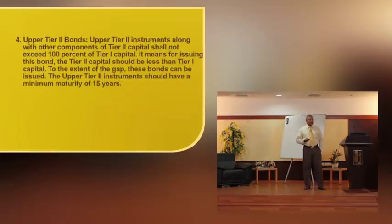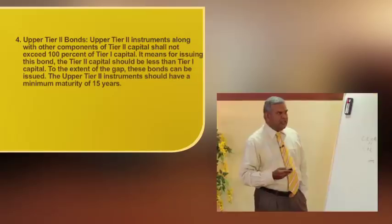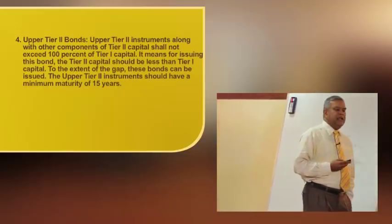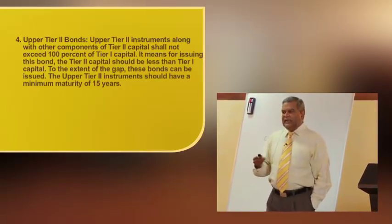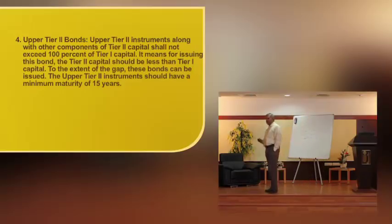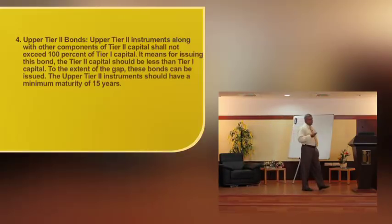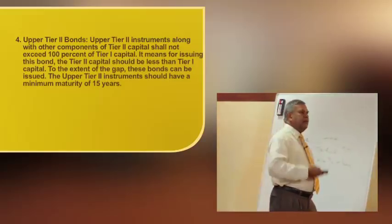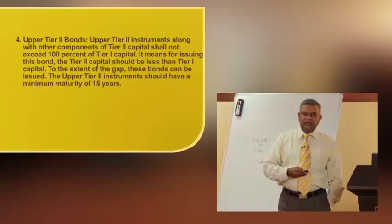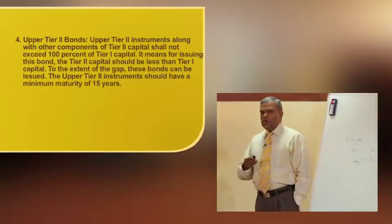The next item is upper Tier-2 bonds — long-term bonds where, as per RBI regulations, the minimum maturity period while issuing should not fall below 15 years, and can be issued up to 50% of Tier-1 capital. For issuing upper Tier-2 bonds, the Tier-2 capital should be less than Tier-1 capital. For example, if Tier-1 capital is 10,000 crore and Tier-2 capital is 8,000 crore, upper Tier-2 bonds can be issued up to the gap of 2,000 crores. At any point of time, Tier-2 capital should not exceed Tier-1 capital.